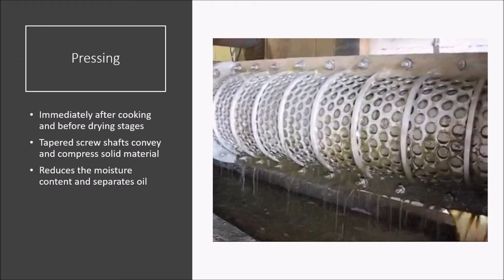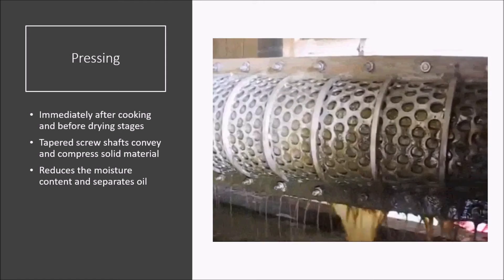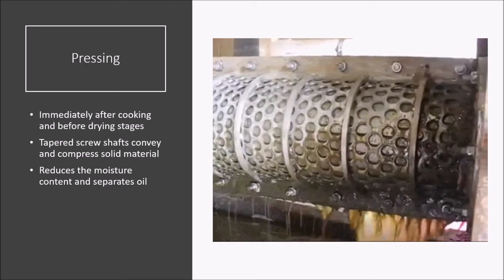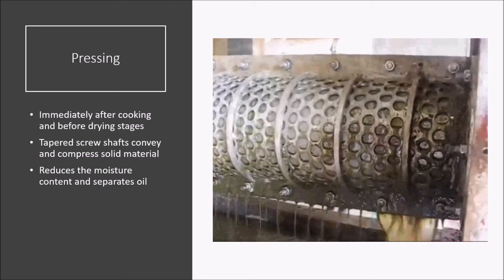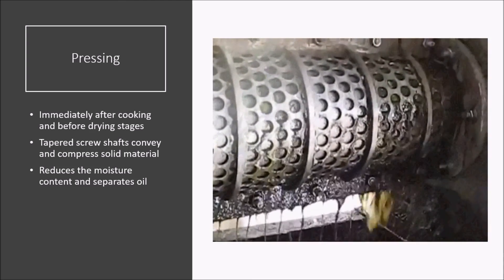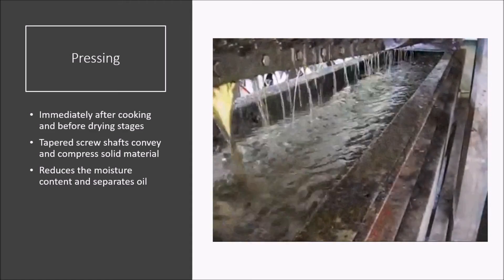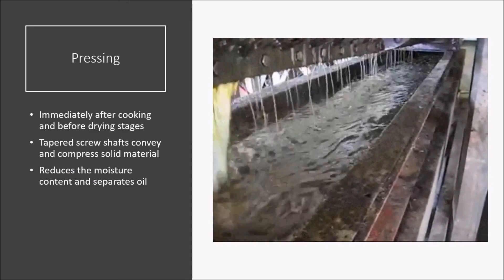After the fish carcasses have been cooked they move into the pressing stage. Here a tapered screw conveys and compresses material which forces water and oil out of a perforated pipe. Shown at the right is an example of a similar application with cow manure instead of fish meal. As the auger spins the liquid is forced out of the pipe while the solids push out the other side.